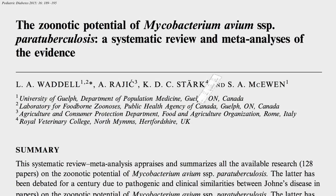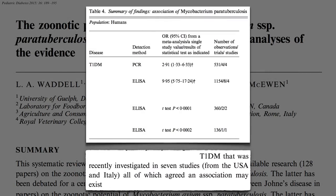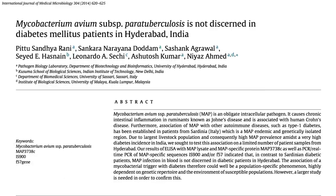This 2015 review found that all 7 out of 7 human studies found an association between type 1 diabetes and paratuberculosis exposure, but it's actually only 7 out of 8. Since that review, a study in India was published finding no link.